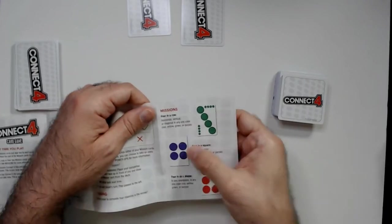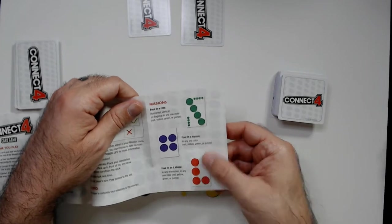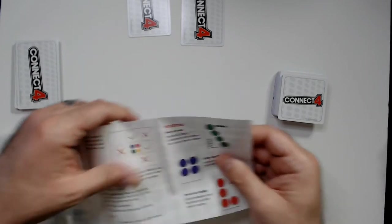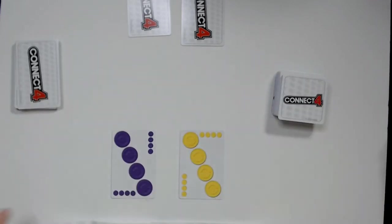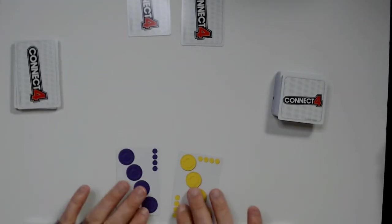Or up and down. This one has to be the four, this one has to be an L, either upper or reversed. Okay, that makes more sense. On your turn, these are missions you're going to keep secret from the other players.